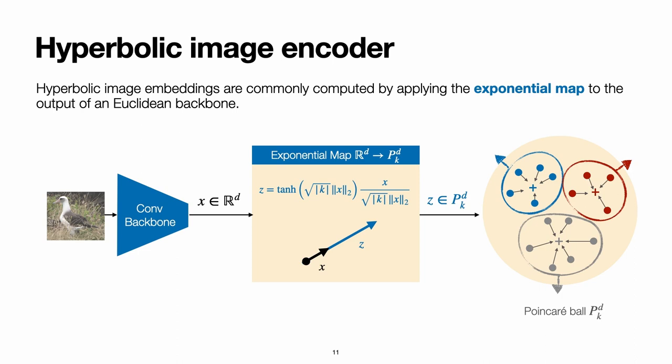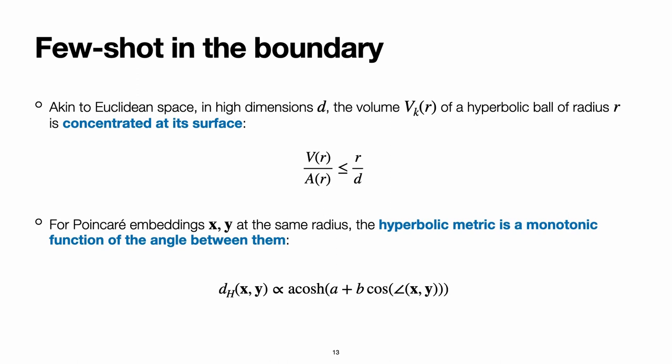And once we have embeddings that lie at the Poincaré ball, we then apply a loss by using a hyperbolic metric. In this case, the prototypical loss would correspond to computing centroids, and then spreading them apart. And this is what we'll be looking at in more detail now, what happens in this representation space.